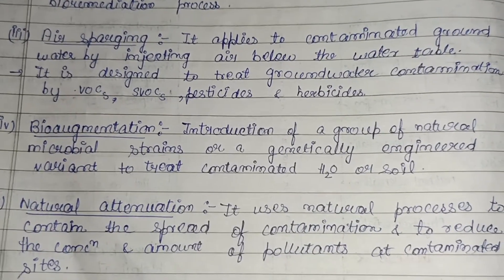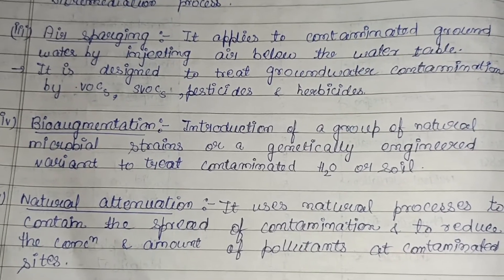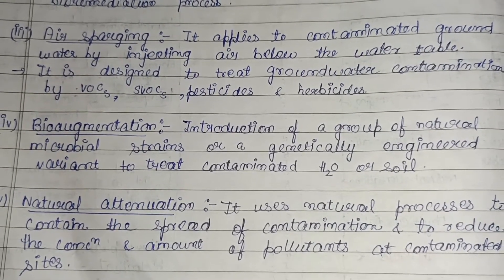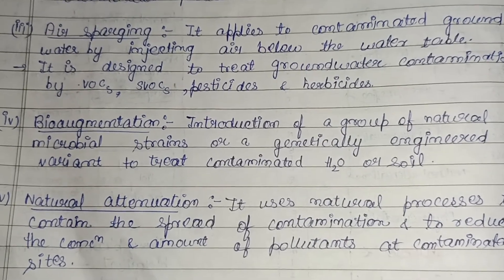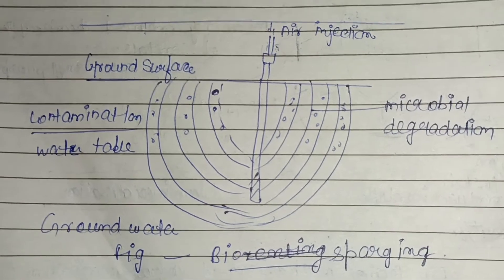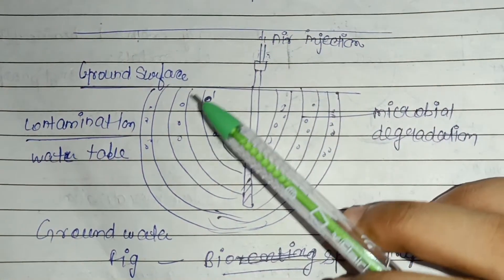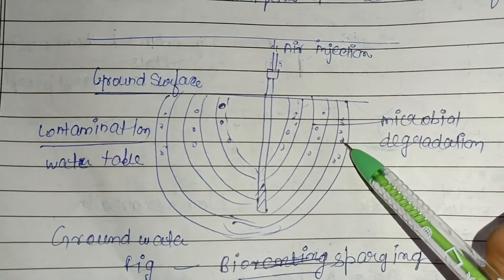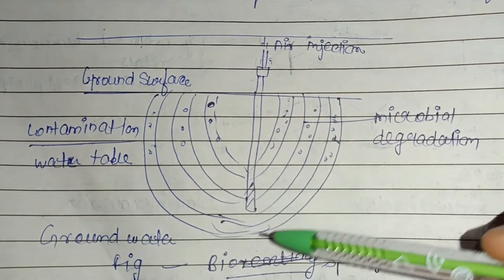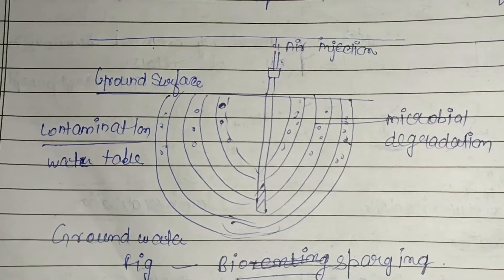Air sparging is another method. It applies to contaminated groundwater by injecting air below the water table, and is designed to treat groundwater contamination caused by VOCs, SVOCs, pesticides, and herbicides. This diagram represents air sparging (also called biosparging). Air is injected beneath the water table, and microbial degradation takes place at the contamination site.